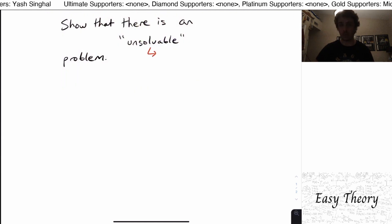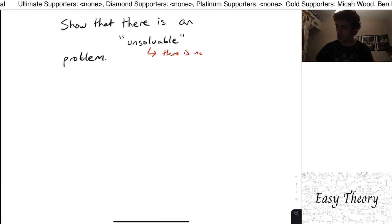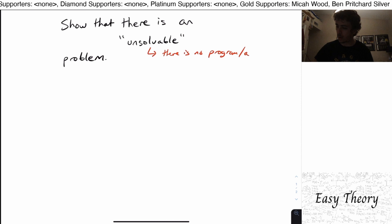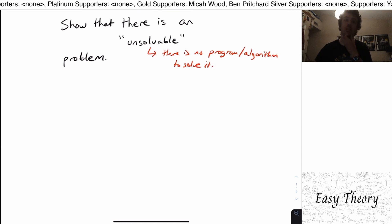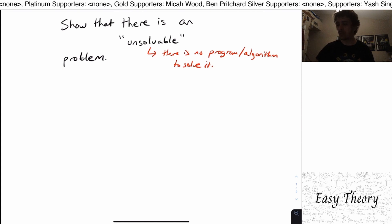Unsolvable you can think of as there is no program or algorithm to solve it. So it's not just that it's really difficult for humans to solve, it's just that there's literally no way to solve this problem.